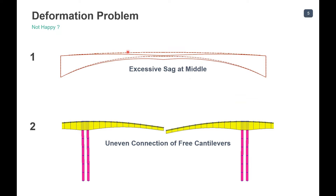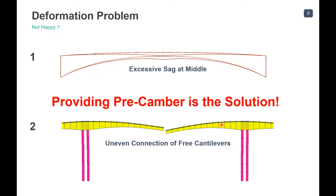Because of these six factors, a balanced cantilever bridge can develop excessive sag at the midspan, causing rider discomfort and affecting serviceability. There can also be a deflection mismatch where uneven connection of free cantilevers occurs from the left and right sides. The solution to both problems is providing a pre-camber. Pre-camber is defined as the designed elevation of the span plus the necessary over-height.